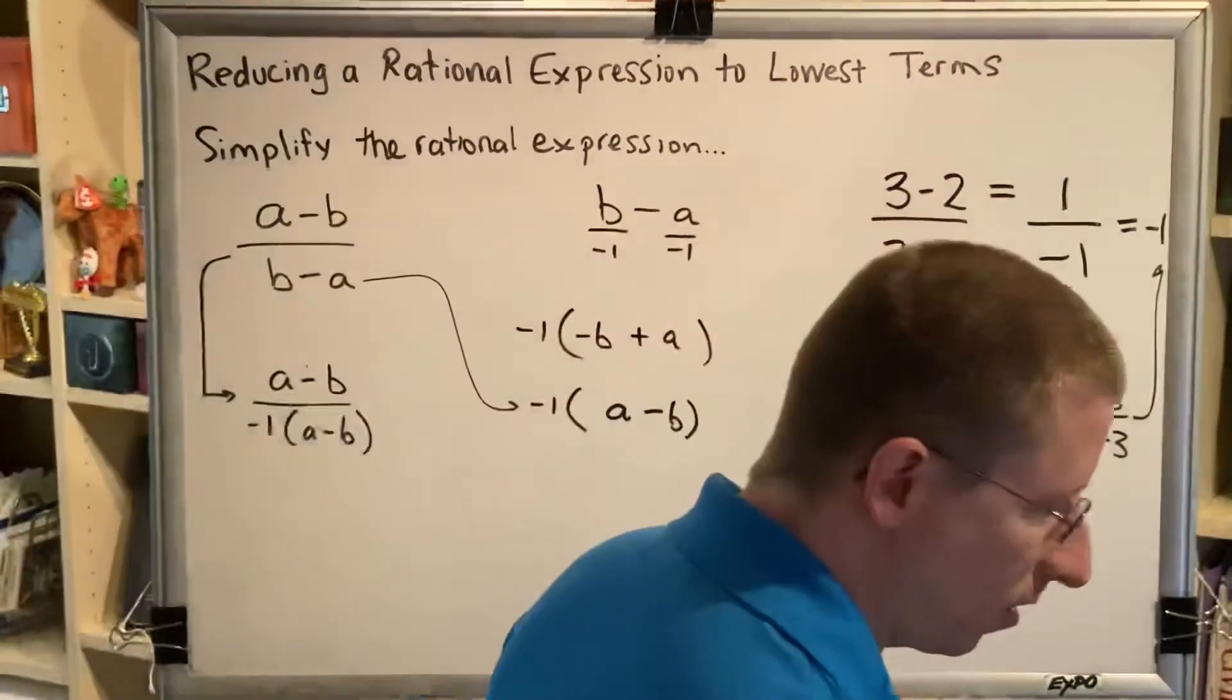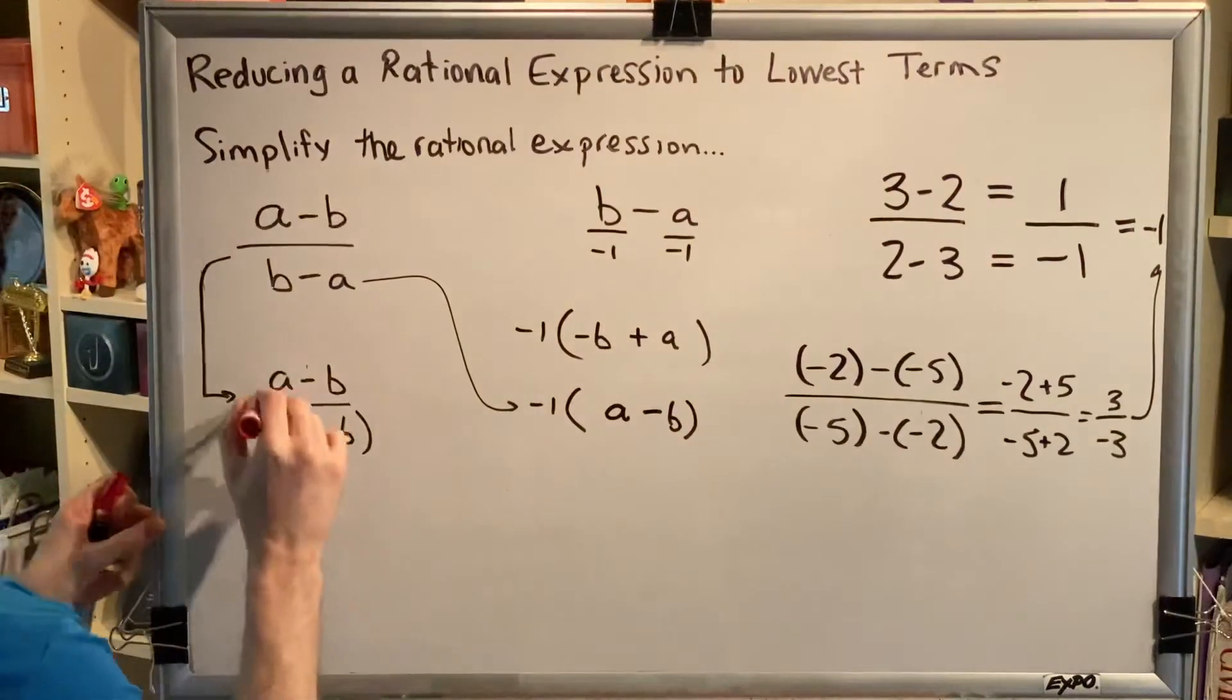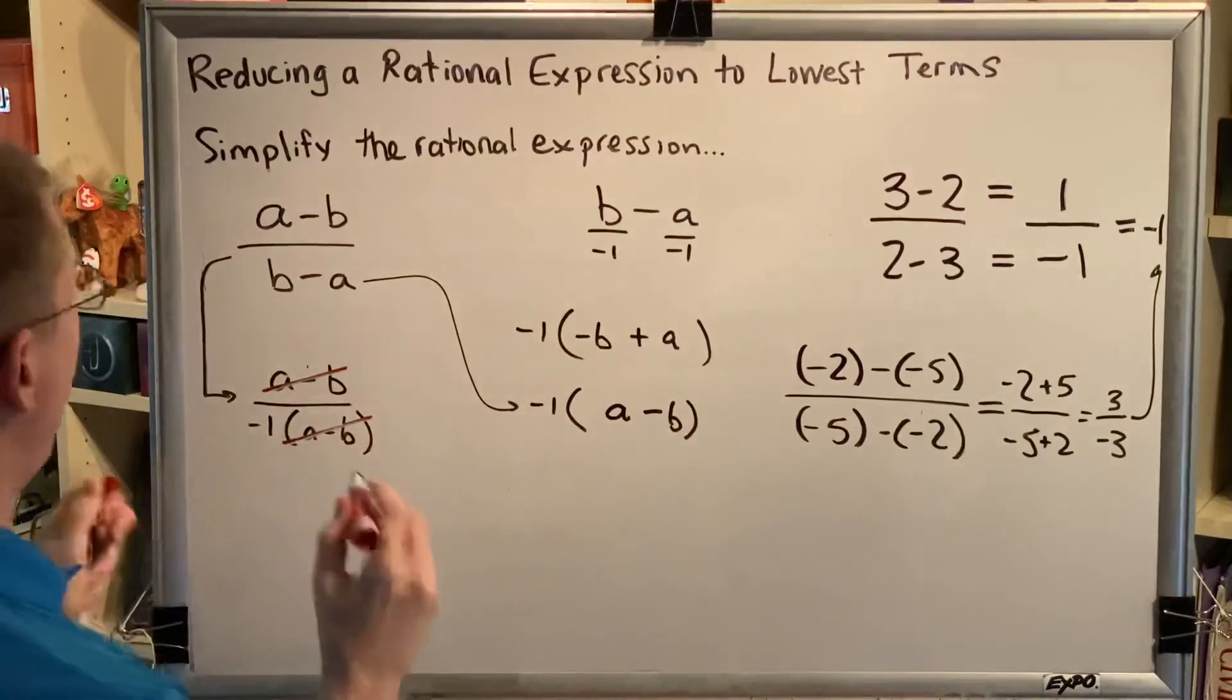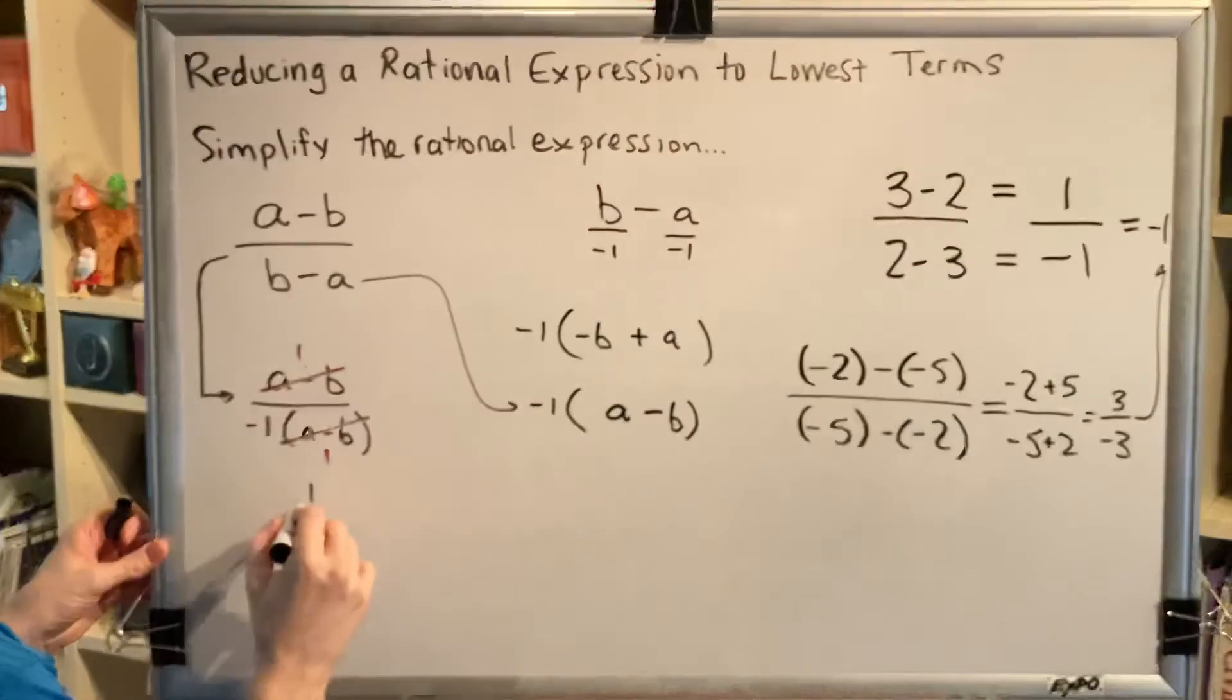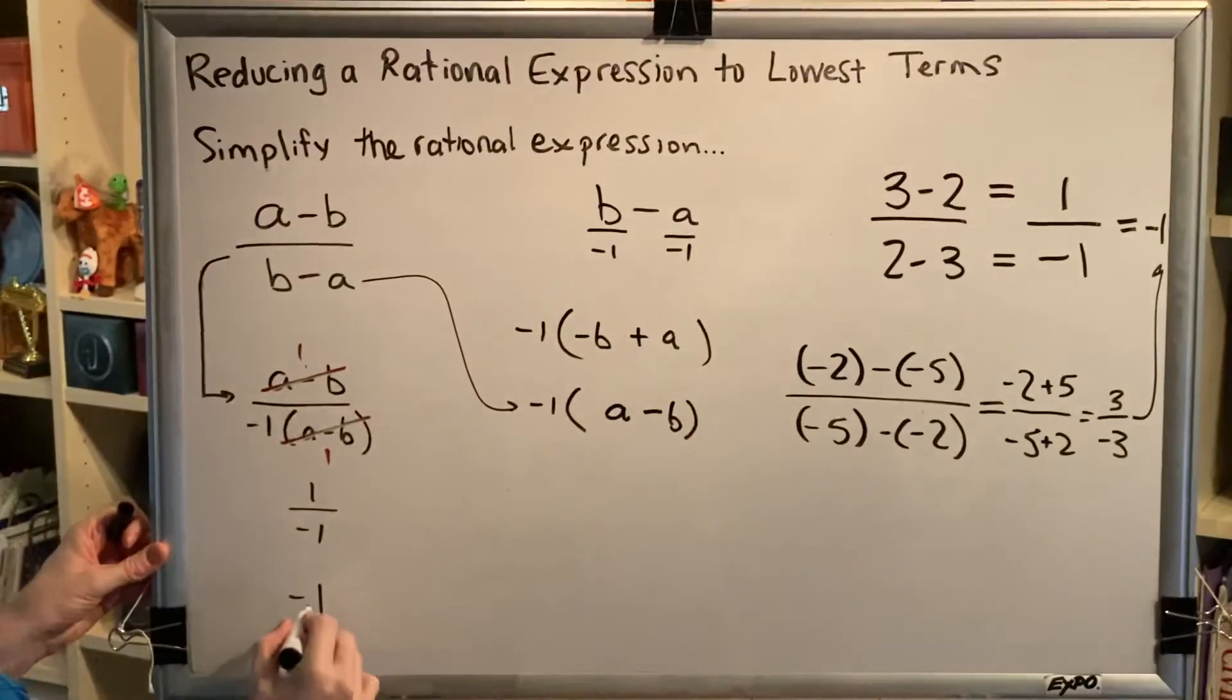Now, the a minus b's cancel because they are both factors. When they cancel, they cancel to 1. And so we get 1 over negative 1, which is negative 1.